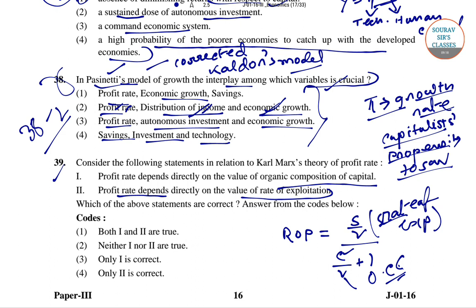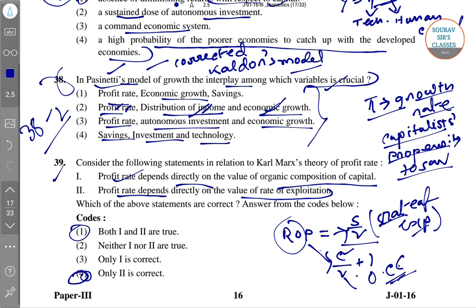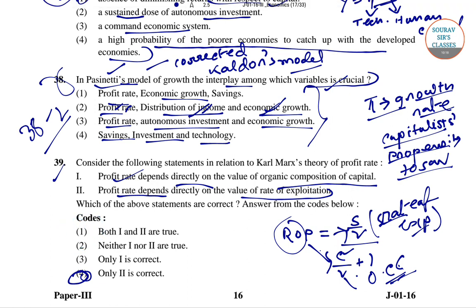This formula shows that the rate of profit depends on: (A) the rate of surplus value, which Marx called the rate of exploitation, describing the relationship of unpaid to paid labor; and (B) the organic composition of capital, representing the relationship between constant and variable capital. The rate of profit is directly proportional to the rate of exploitation (S/V) and inversely proportional to the organic composition of capital (C/V). Therefore statement 1 is incorrect and only statement 2 is correct, so for question 39 the right answer is option 4.